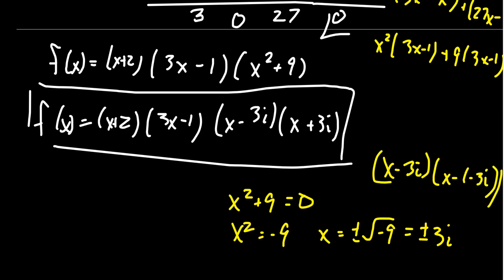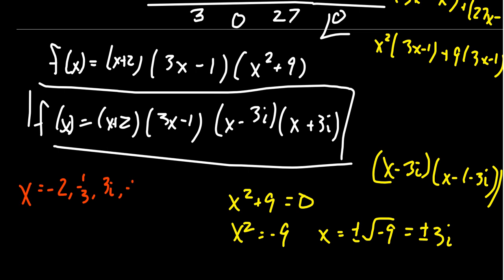So finding the roots is the same as finding the factors. The roots of this polynomial are x = −2, x = 1/3, and x = ±3i. We have successfully factored this polynomial and found all of its roots.